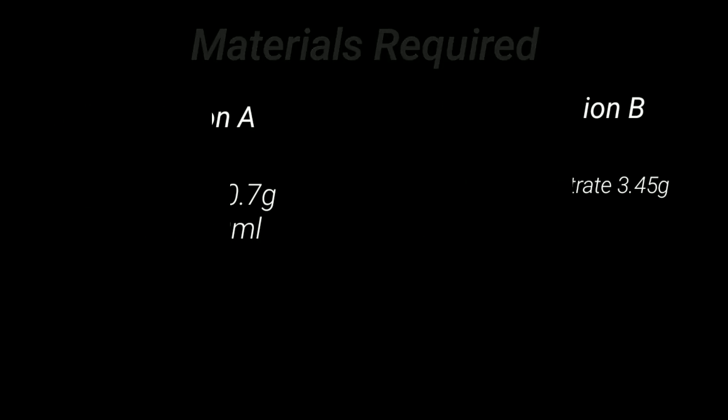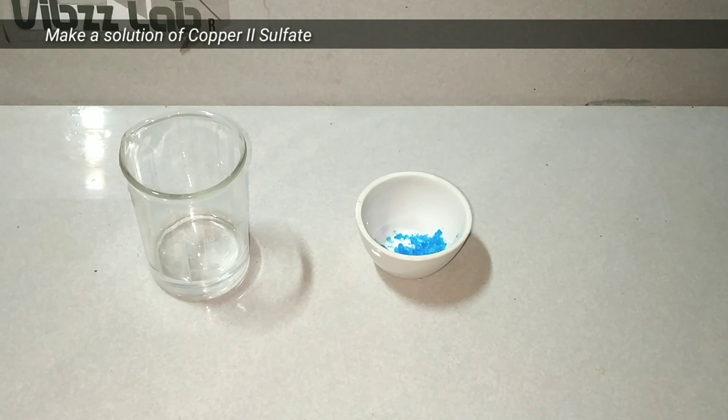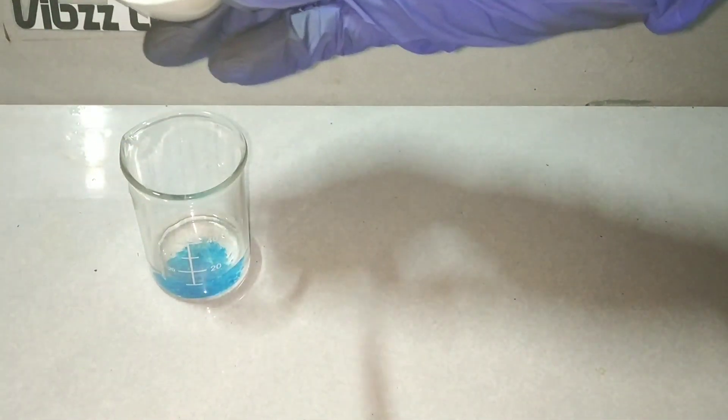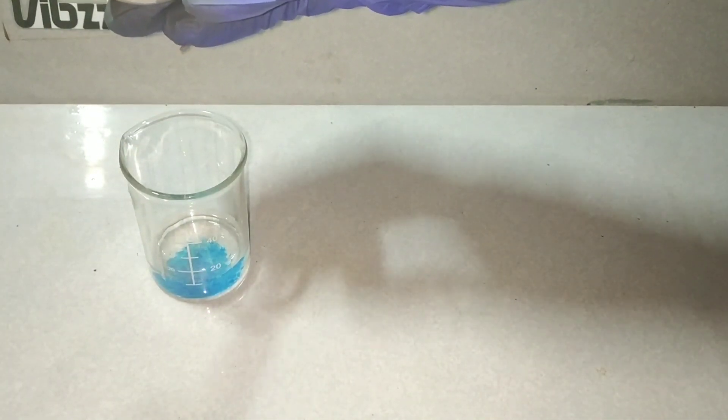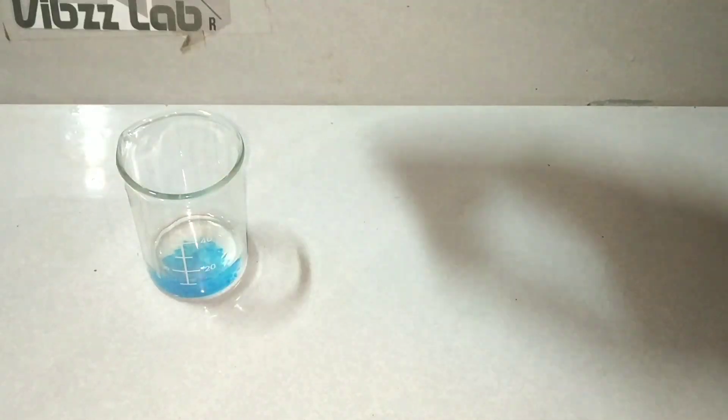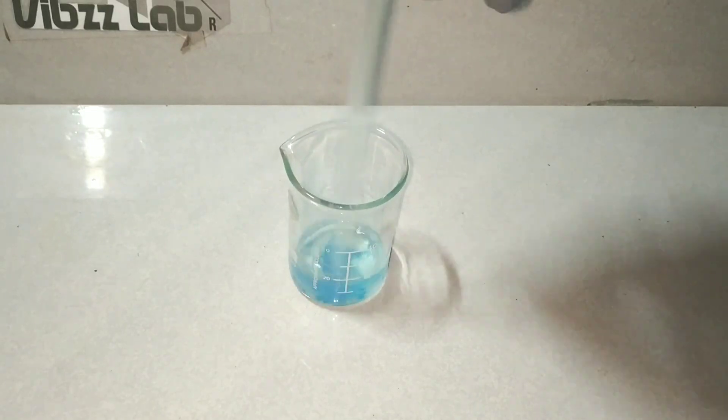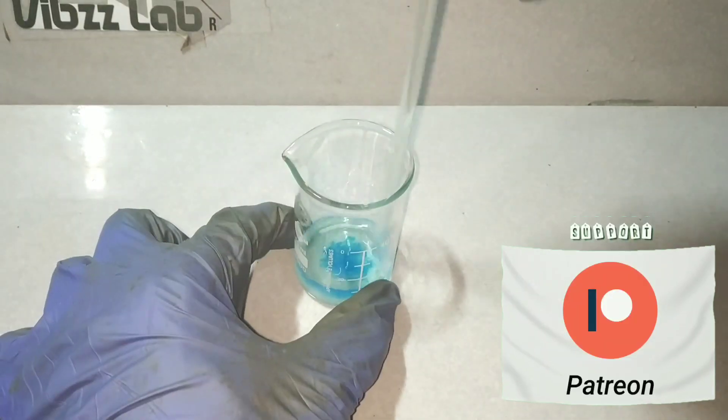Let us first make Fehling A solution, which is a solution of copper 2 sulphate. I have taken 0.7 grams of copper 2 sulphate to make 10 ml of the reagent. Copper 2 sulphate is pretty well soluble in water. If it's getting difficult to dissolve, just use some warm solution so that it will dissolve easier.